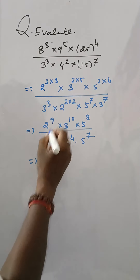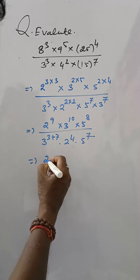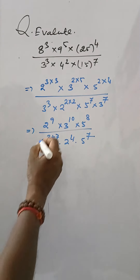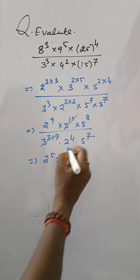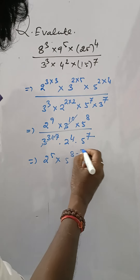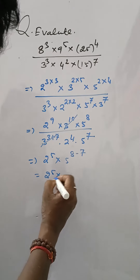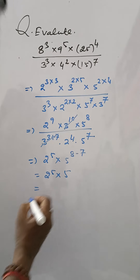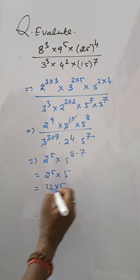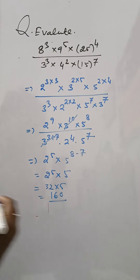Finally, 2 to the power 9 divided by 2 to the power 4 gives 2 to the power 5. 3 to the power 10 divided by 3 to the power 10 is cancelled. 5 to the power 8 minus 7 gives 5 to the power 1. So we have 2 to the power 5 into 5, which is 32 into 5. The answer is 160.